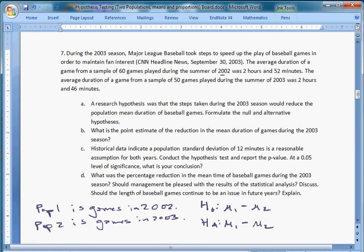What is μ₁ minus μ₂? It's the difference between the mean length of a game in 2002 and the mean length of a game in 2003. Now, if the question is asking that these steps should reduce the population mean duration, what that's saying is that μ₂, the mean in 2003, is going to be less than μ₁. That means μ₁ minus μ₂ should be positive.